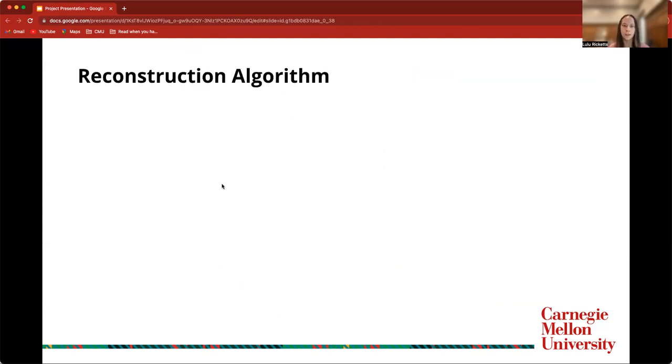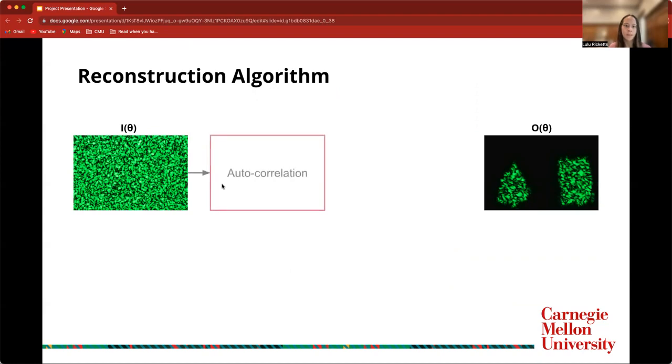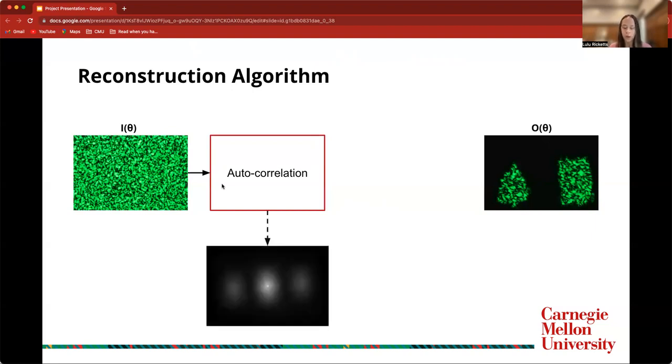The overall pipeline for the reconstruction algorithm is as follows. We have the camera image of the speckle patterns I of theta, and the goal is to reconstruct the original object O of theta. The first step is to perform object autocorrelation of the camera image I of theta. And this could look something like this. We do this because due to the memory effect, the autocorrelation of I of theta should be approximately equal to the autocorrelation of O of theta.